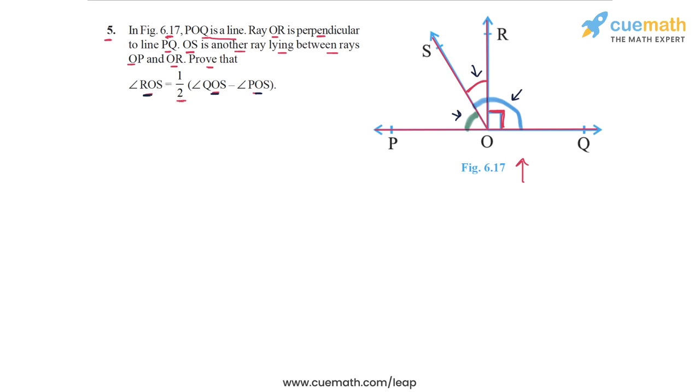Okay, hoping that you've thought about it, let's go forward. First, I'm going to write angle QOS, this angle marked in blue, in terms of angle ROS. How? Well, angle QOS is simply angle ROS plus this 90-degree angle. So angle QOS equals 90 degrees plus angle ROS.